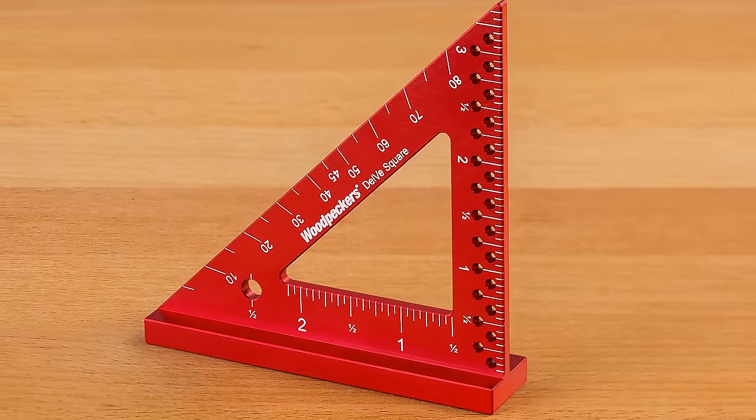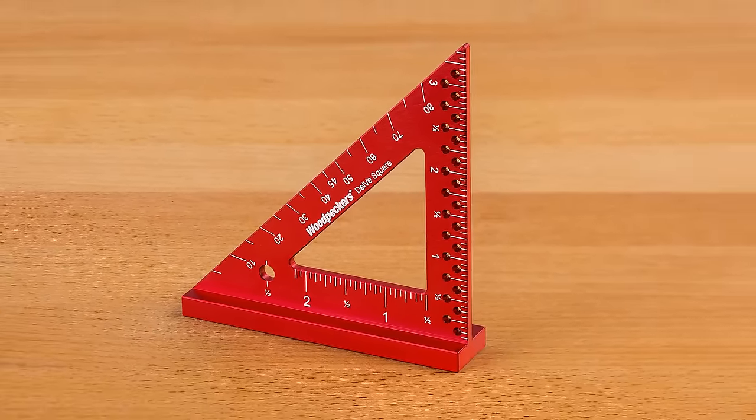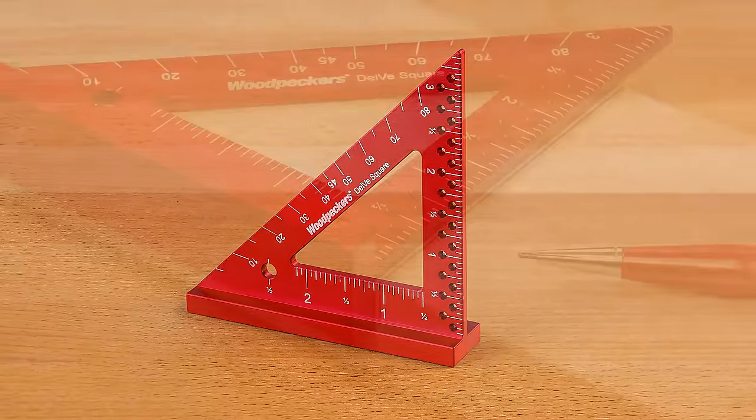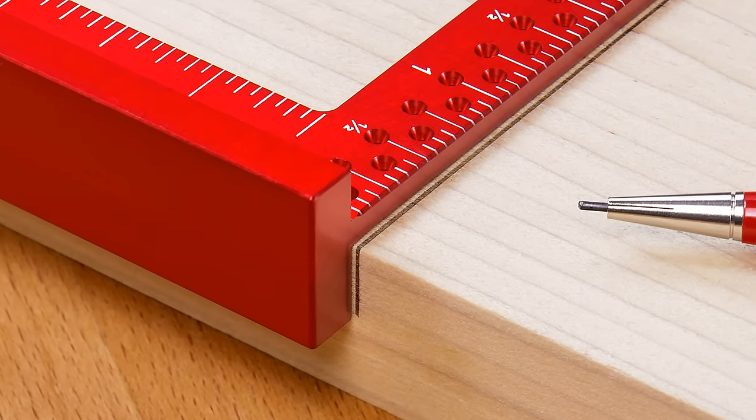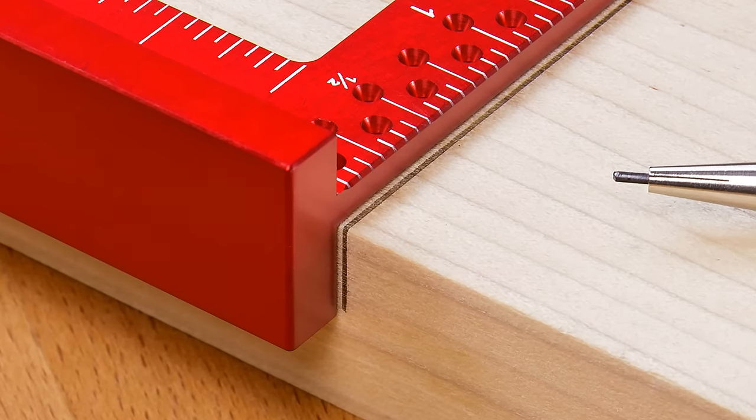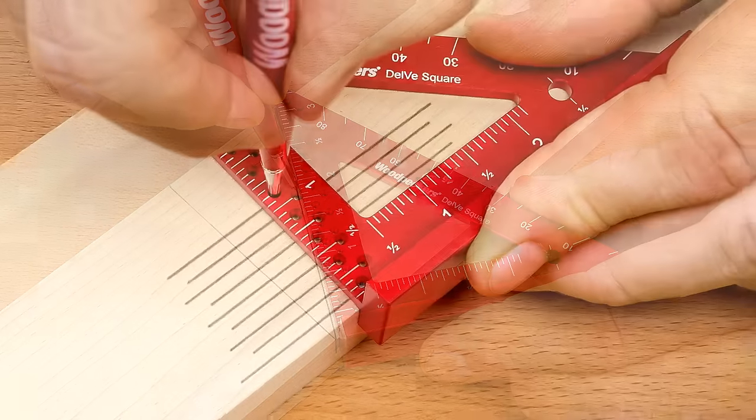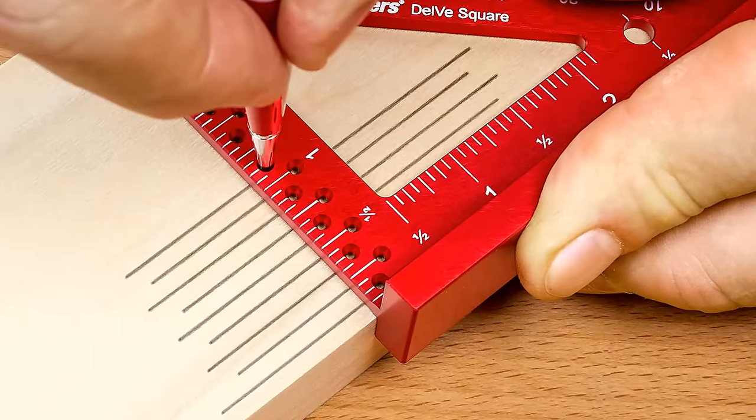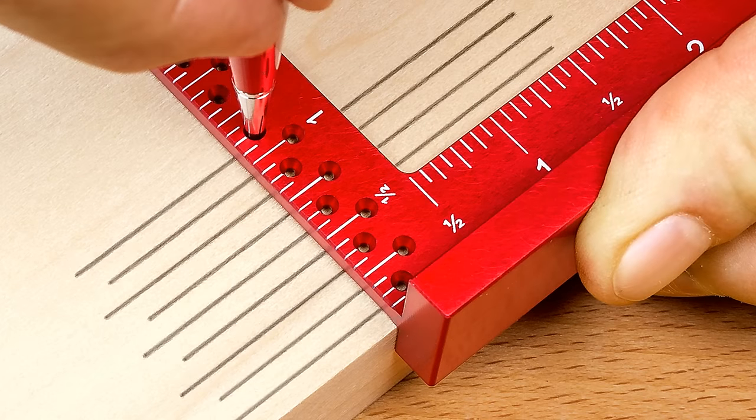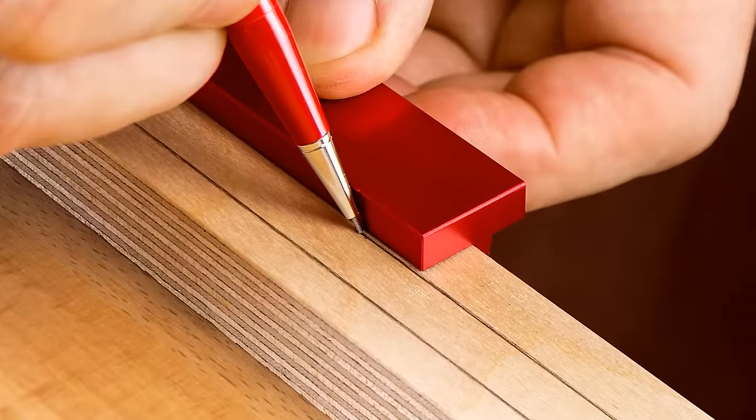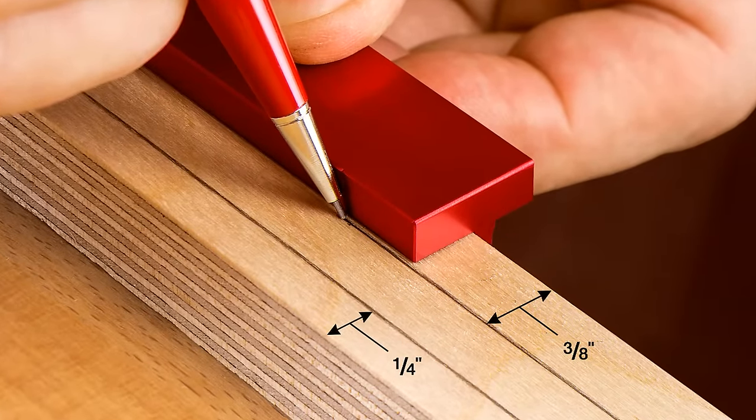More and more Delve Square uses. The list is seemingly endless, but here are a few more. Scribe lines on adjoining faces of stock. Lay out angles with the angle scale. Use the holes of the measurement scale to scribe lines in 1 eighth inch increments. Use the base to scribe lines ¼ inch or 3 eighths inch along the edge of your stock.